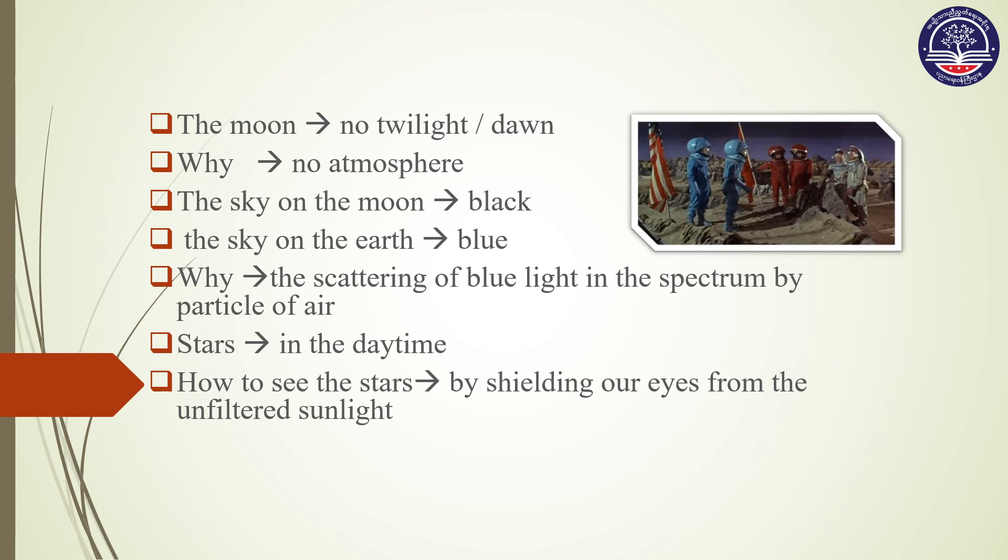The lunar sky is black. The blue sky on Earth is produced by the scattering of blue light in the spectrum by particles of air. On the moon, stars are visible in the daytime, although you would have to shield your eyes from the unfiltered sunlight to see them.